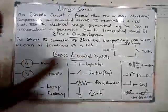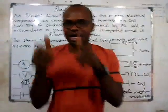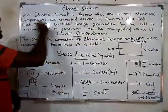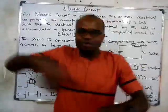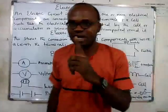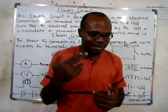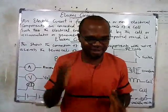In subsequent circuit diagrams, we are going to be using these components, so you should be able to identify them whenever you see them. These are known as electrical components. Whenever electrical components are connected using wire across the terminals of a battery, it is known as an electric circuit. When you go to people repairing TVs, you'll hear them talking about circuits. So after today's class, when somebody says circuit, you know what a circuit is. Thank you.